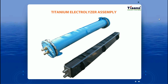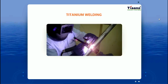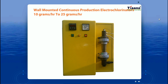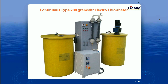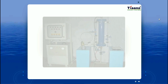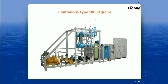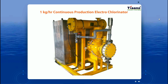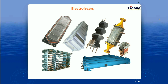The electrolyzer is made of titanium and coated with mixed metal oxides of platinum, welded using a special process. Continuous production models range from low-capacity wall-mounted types to medium-range compact fully automatic units, and high-capacity systems starting from 500 grams per hour up to 500 kilograms per hour, operating on brine solution or seawater. Very high-capacity systems are supplied with pumps, brine dilution systems, storage tanks, hydrogen venting systems, PLC control panels, hypo dosing pumps, and acid cleaning systems.